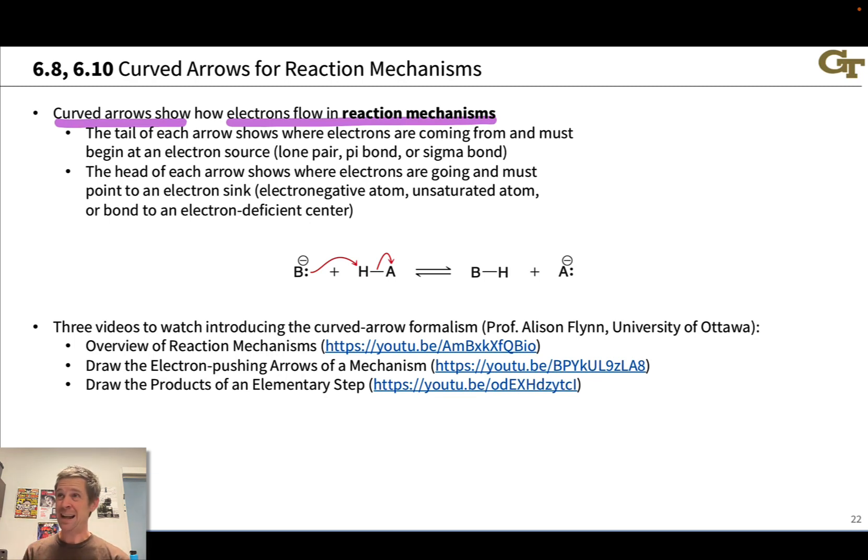But in reaction mechanisms, curved arrows to some extent have a physical interpretation where an elementary step indicates actual chemical changes occurring. So we'll be breaking and forming sigma bonds in elementary steps and using curved arrows to depict these movements of electrons as reactants are converted to intermediates and then ultimately to products.